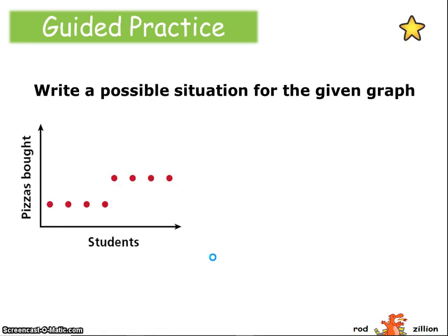So now you're going to practice this. Given the graph, create a situation that matches the data from the graph. Pause your video now. All right, so in this graph we're comparing the number of pizzas bought compared to the number of students. Now it is a discrete graph, so I know we're just talking about distinct points, not a continuous line.